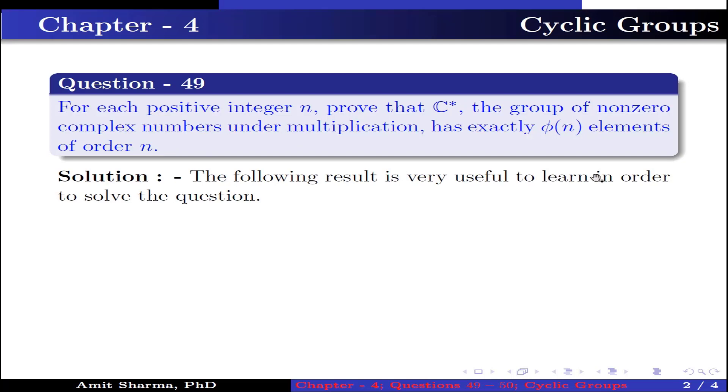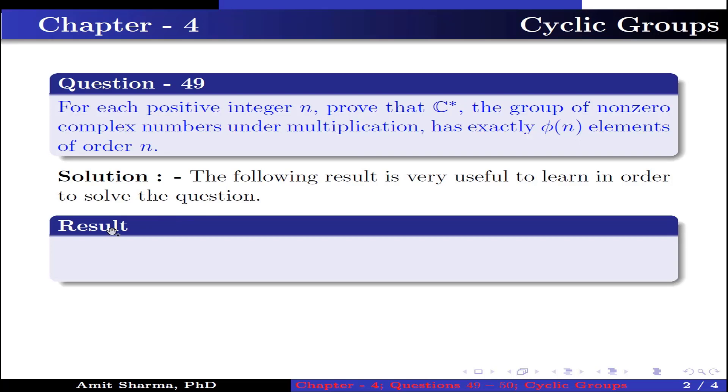The following result is very useful to learn in order to solve the question. If d is a positive divisor of n, the number of elements of order d in a cyclic group of order n is φ(d), where φ is Euler's phi function.